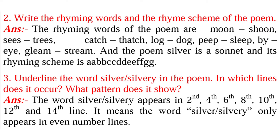The third question is: underline the words silver and silvery in the poem — in which lines does it occur, and what pattern does it show? The word silver or silvery appears in the second, fourth, sixth, eighth, tenth, twelfth, and fourteenth lines. This means the word silver or silvery only appears in even-numbered lines.